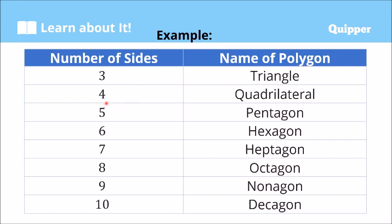If the polygon has four sides, it's called a quadrilateral. If it has five sides, it's a pentagon. From the word penta, meaning five. Quadrilateral comes from quadro or quadra, meaning four.